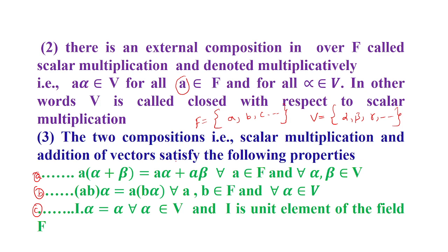The two compositions — scalar multiplication and vector addition — satisfy the following basic properties: distributivity with respect to addition, associativity with respect to multiplication of scalars, and the existence of the unit scalar. Also, the existence of the zero scalar means that zero times alpha equals alpha times zero equals zero. Similarly, the existence of the unitary scalar means 1·alpha equals alpha.